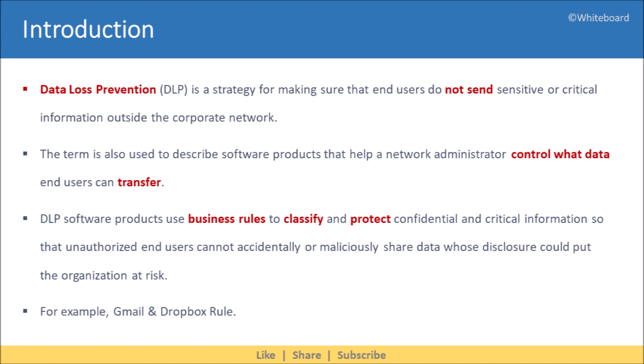Data loss prevention is a strategy for making sure that end users do not send sensitive or critical information outside the corporate network. The term is also used to describe software products that help a network administrator control what data end users can transfer. It uses business rules to classify and protect confidential and critical information, so that unauthorized end users cannot accidentally or maliciously share data whose disclosure could put the organization at risk. For example, it can detect and block someone sending mail to their Gmail account, or someone uploading data to their Dropbox account.